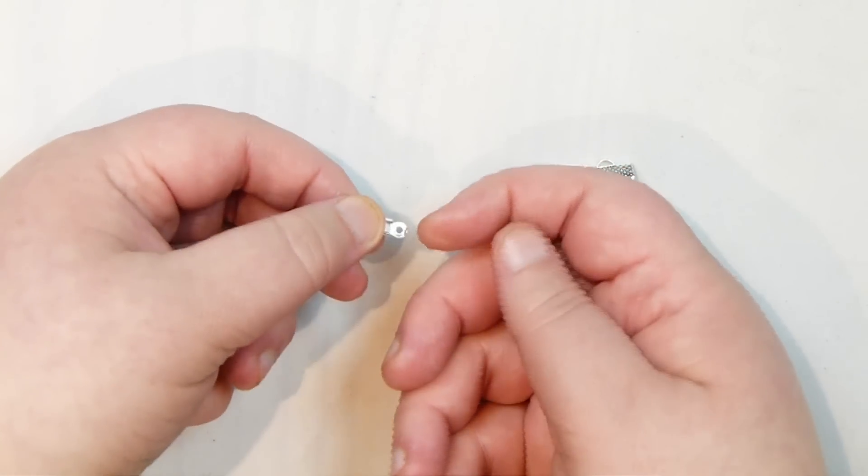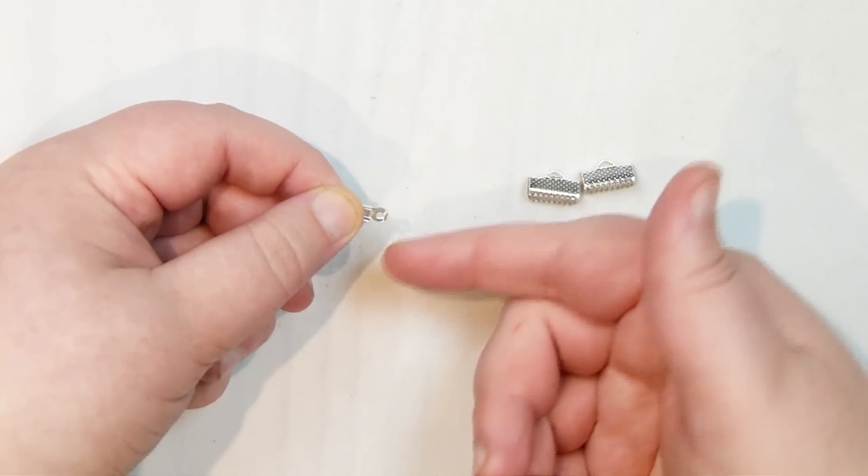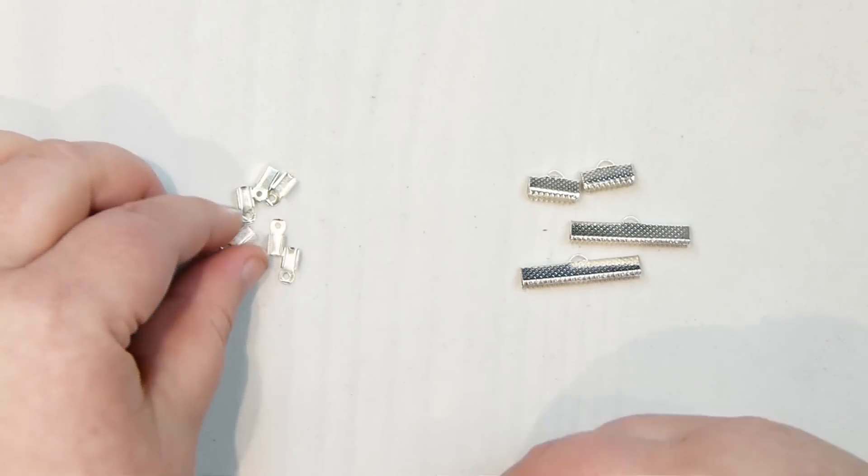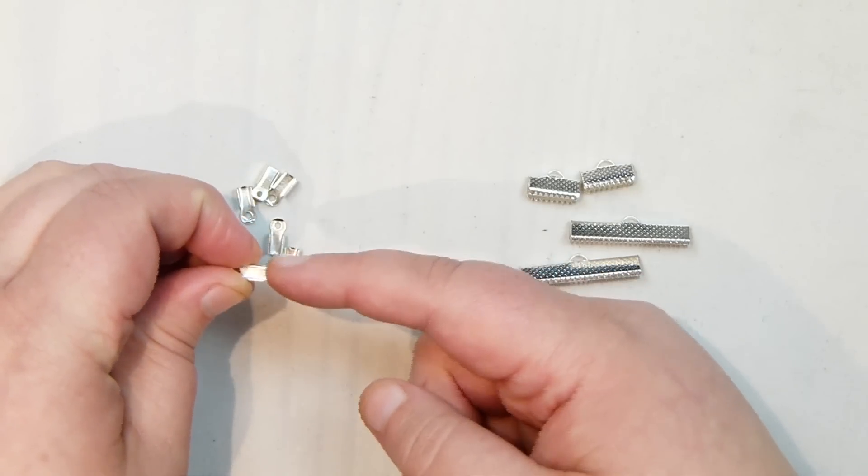Now you can also add a bit of glue. And then on the top you have this loop that you then use to add your findings, so your clasp with jump rings and that. So that is if you have more of a smaller end that will fit inside of there.